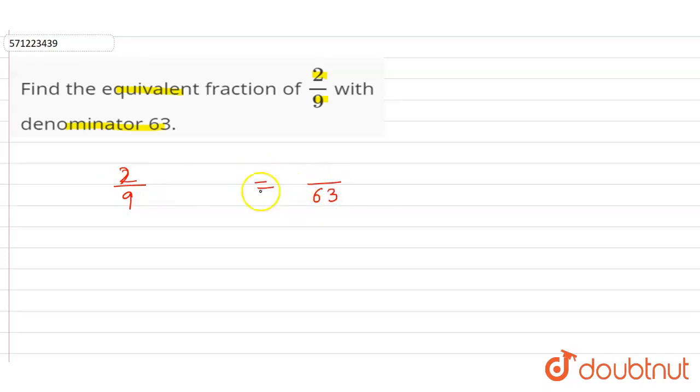We have to multiply with such a number so that our denominator becomes 63. We know that 9 into 7 is 63, so we have to multiply 2 by 9 with 7 by 7.